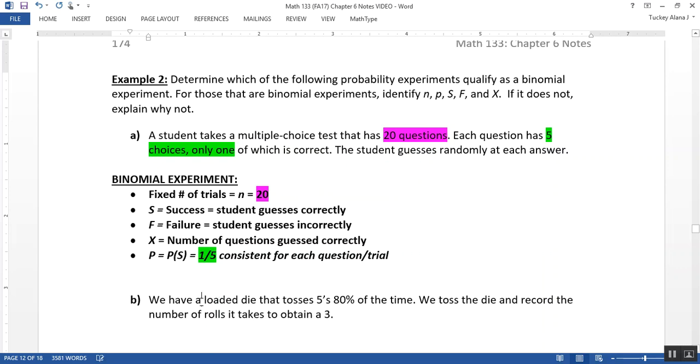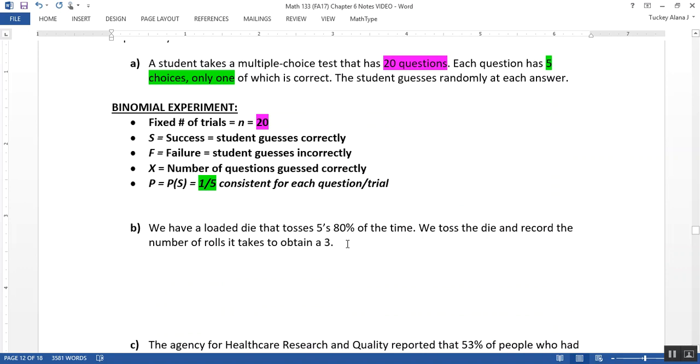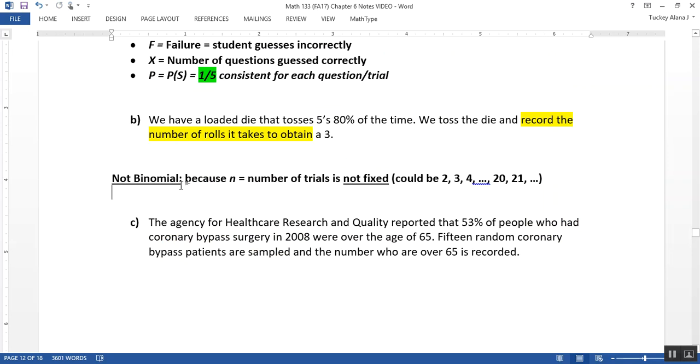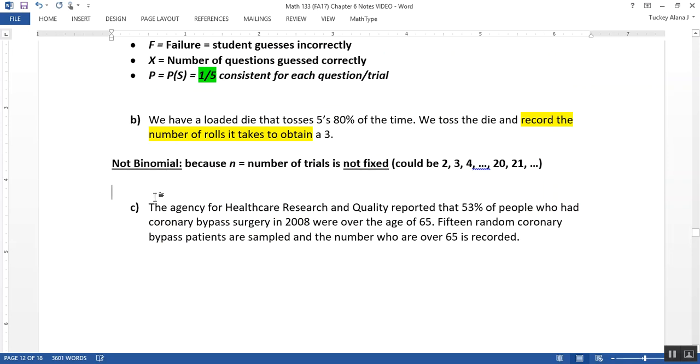All right. What about letter B? We have a loaded die that tosses fives 80% of the time. We toss the die and record the number of rolls it takes to obtain a three. Ah, that's a problem right there. Record the number of rolls it takes to obtain a three. That's a little bit worrisome, because we don't have a fixed number. So you could pick this die up and take three times to get a three, or you could pick the die up and take ten times to get a three. So you keep rolling until you obtain a three. That is not binomial.